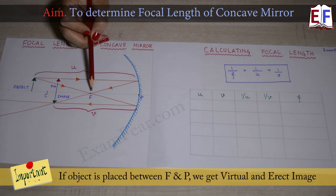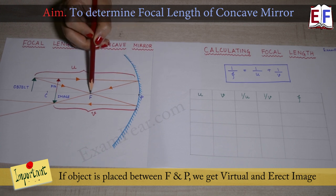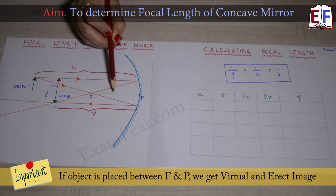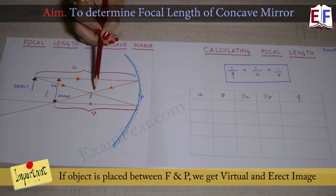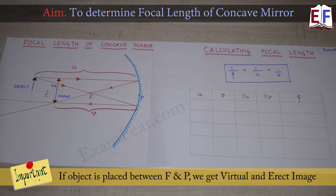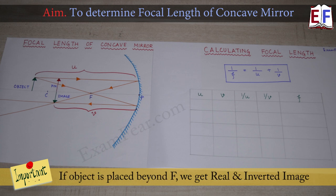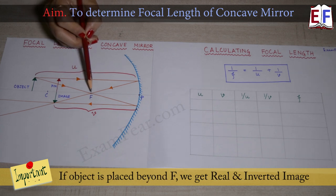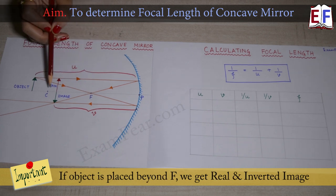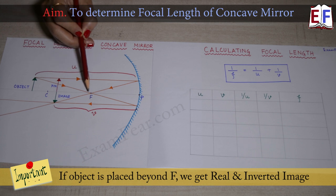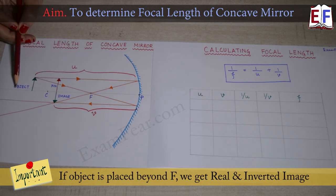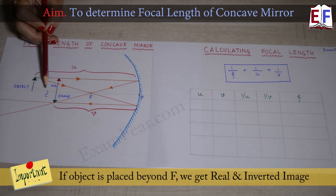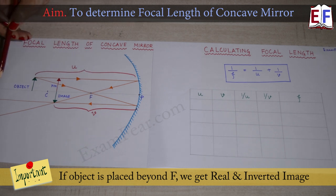If an object is placed between the pole and the principal focus, you get a virtual, erect image — that will not work for us. So we have to ensure that we place the object beyond the principal focus, anywhere between the principal focus and the center of curvature, or beyond the center of curvature. Any place beyond the principal focus would do.